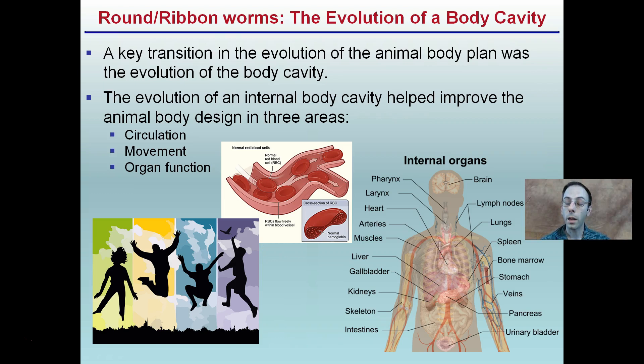Those three main areas are: circulation, movement, and organ function — how organs are able to perform at a very high efficiency level. That helps through the aid of a circulatory system, which can improve an animal's overall movement.